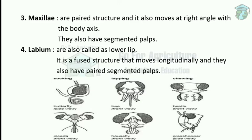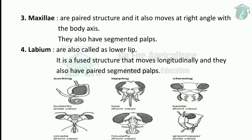Now we can see the modifications of mouth parts in different insects: first, the sucking type; second, the lapping type; and third, the chewing type. The sucking type is found in butterflies, lapping type in bees, and chewing type in beetles, cockroaches, or grasshoppers.